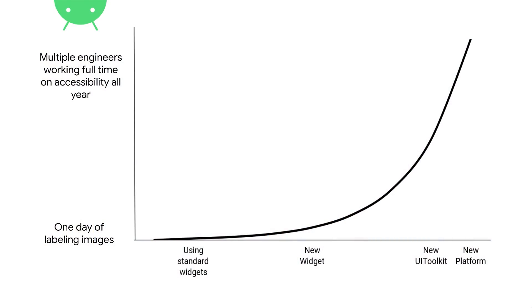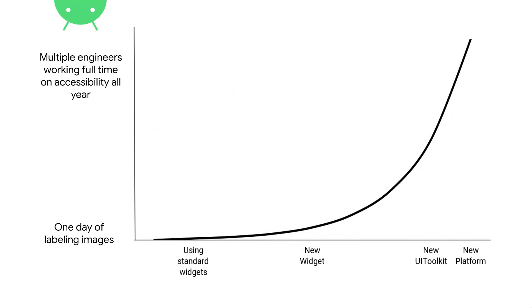This is captured in a chart showing our observation of how much accessibility work you'll need to do based on how custom your UI is — from inside Google. At the easiest end, using all standard widgets means accessibility is built in and you just label your images. Once you move into custom widget territory, things get more non-trivial, as we saw with ViewPager2. And if you're building a new UI toolkit, it's going to be very complicated — you'll need multiple engineers working full-time on accessibility. We encourage you to move as far to the left of this chart as possible, and if you must be on the right side, be honest about the work required and allocate those resources, because if you don't, you're choosing to hurt your users.